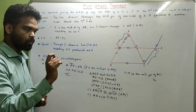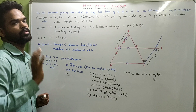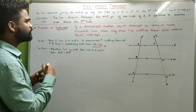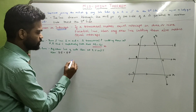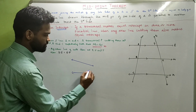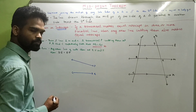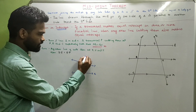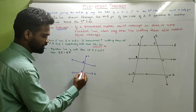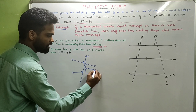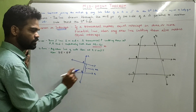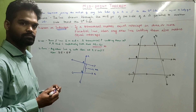Let us see one more interesting theorem — the theorem on intercept. First of all, what is an intercept? Suppose you have two lines in a plane, P and Q, and there is another line N. It cuts P at A and Q at B. Then the line segment AB is known as the intercept on N by P and Q.